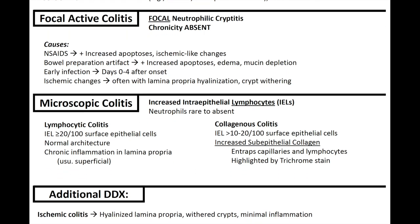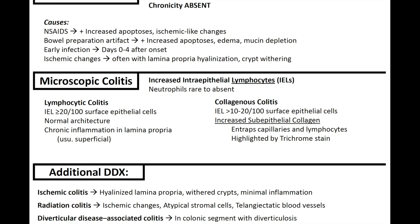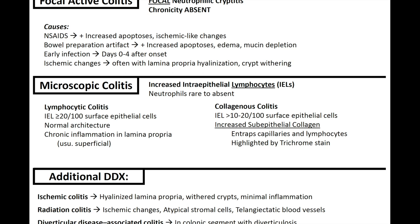Also on the differential for IBD, you can have focal active colitis, which is similar to active colitis but occurs focally. You have focal neutrophilic cryptitis and absence of chronicity. Causes of focal active colitis include NSAIDs — with increased apoptosis and ischemic-like changes — bowel preparation artifact with increased apoptosis, edema, and mucin depletion. Early infection in days zero to four after onset, or ischemic changes, can cause focal active colitis with lamina propria hyalinization and crypt withering.